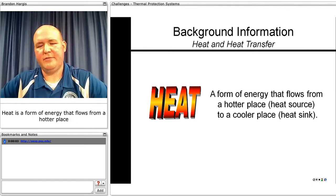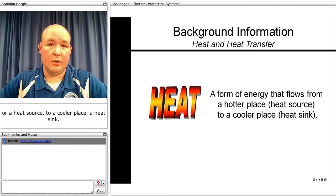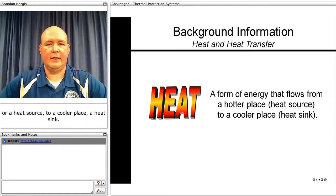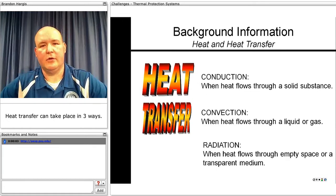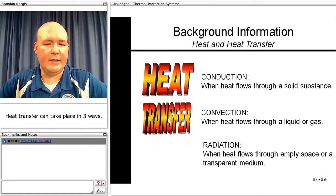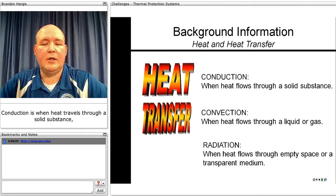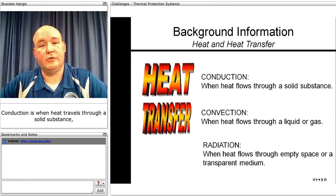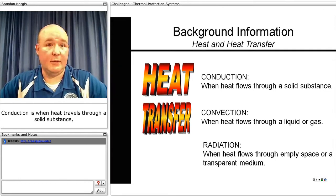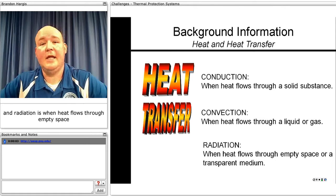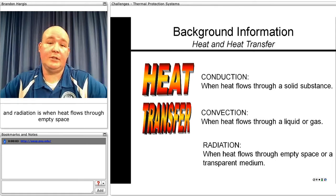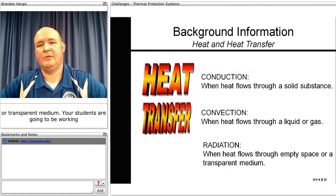Heat is a form of energy that flows from a hotter place, or a heat source, to a cooler place, a heat sink. Heat transfer can take place in three ways. Conduction is when heat travels through a solid substance. Convection is when heat flows through a liquid or a gas. And radiation is when heat flows through empty space or a transparent medium.